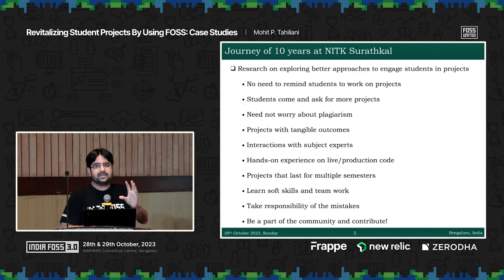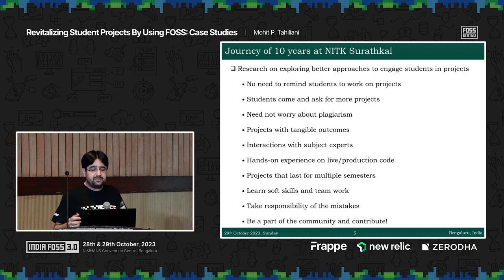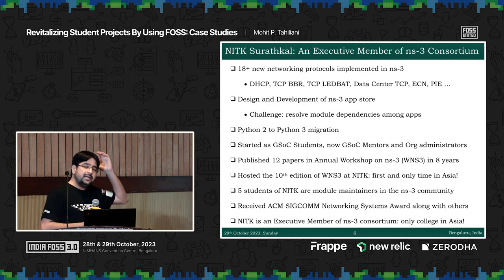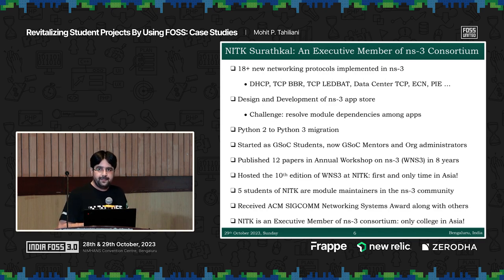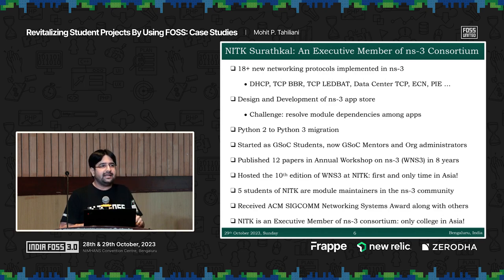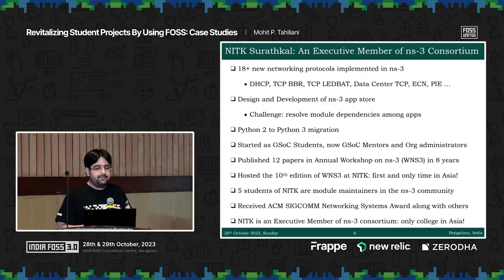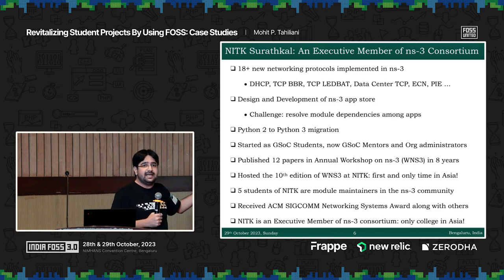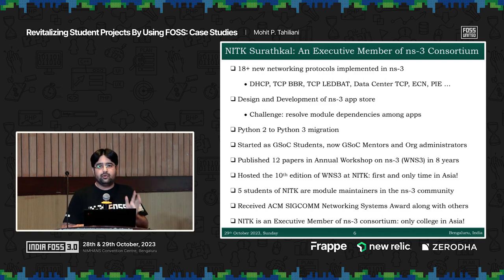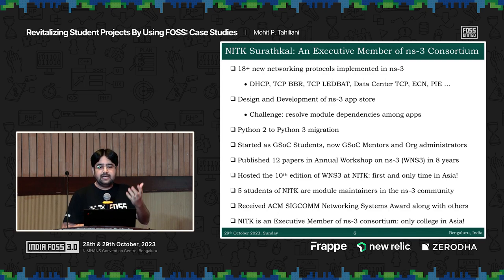The next slide shows what contributions these students are capable of making — most contributions are from fifth to seventh semester students. We started our journey with NS3, an open source network simulator, because I'm from a networking background. In the last eight years, 18 new network protocols have been implemented single-handedly by NITK Suratkal. Two lakh lines of code in NS3 today are written only by NITK Suratkal students from third to eighth semester. The protocols they implemented include DHCP — the fundamental protocol that allocates IP addresses — and Google's TCP BBR. The first simulation model in the world of Google's TCP was introduced by a NITK Suratkal fifth semester student.